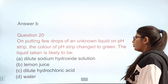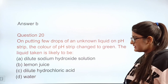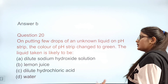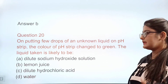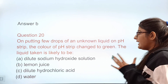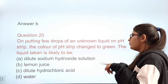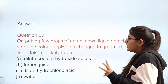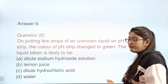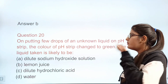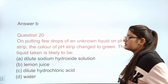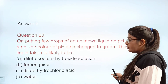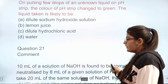Question 20: On putting a few drops of an unknown liquid on a pH strip, the color of the pH strip changes to green. The liquid taken is likely to be — options: dilute sodium hydroxide, lemon juice, dilute hydrochloric acid, water. Correct answer: D — water, as it turns the pH strip green.